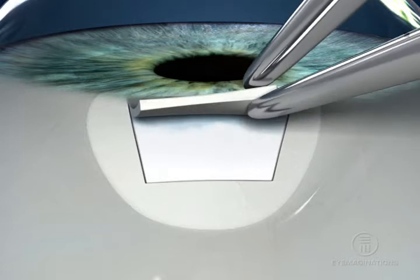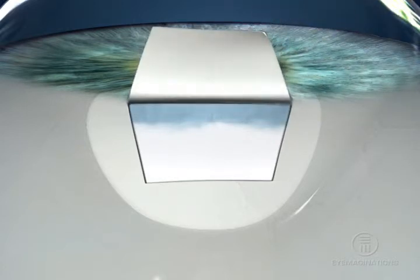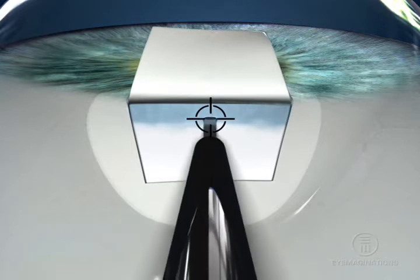Instead of sclerostomy and iridectomy, a pre-incision is made into the anterior chamber parallel to the iris at the bottom of the gray zone using a 23 to 27 gauge needle.